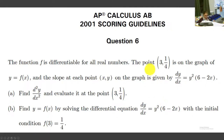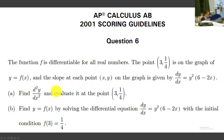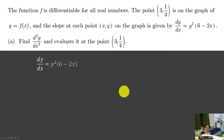The function f is differentiable for all real numbers. The point (3, 1/4) is on the graph of y equals f of x, and the slope at each point (x, y) on the graph is given by dy/dx equals y squared times (6 minus 2x). Part A: find the second derivative of y with respect to x, and evaluate it at the point (3, 1/4).